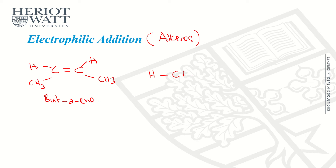Yes, because H is delta positive and Cl is delta negative. Why is it so? Because Cl is highly electronegative, so it will pull electrons from the hydrogen, and therefore hydrogen will experience a lack of electrons, hence having a partially positive charge. Since electrophiles love electrons, the electrophile will attack anything electron-rich, which is the double bond here. When we draw the curly arrow, we always draw from electrons to the positive charge, which is the electrophile.